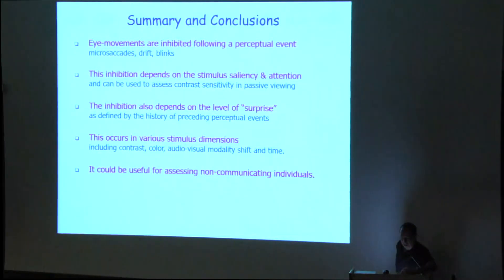Eye movements, the involuntary eye movements, are inhibited following a perceptual event. The microsaccade, the drift, the blinks, the spontaneous blinks. This inhibition depends on the stimulus saliency and attention, and can be used to assess contrast sensitivity in passive viewing. The inhibition also depends on the level of surprise, as defined by the history of preceding perceptual events. Surprise makes a longer inhibition. More saliency makes a shorter inhibition. This occurs in various stimulus dimensions: contrast, color, audiovisual, modality shift, and time. It could be useful for assessing non-communicating individuals.